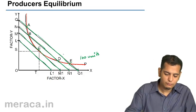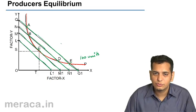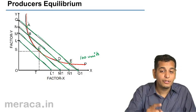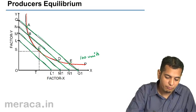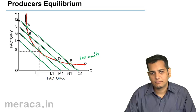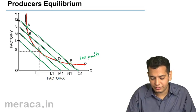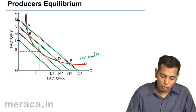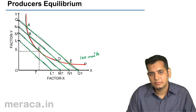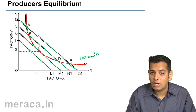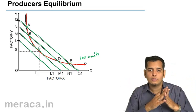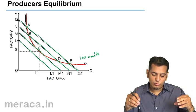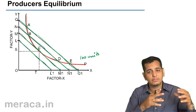It is very simple. The producer starts with the highest iso-cost line, which is QQ1, where he can produce 100 units at combination A. Likewise, he can produce 100 units at combination E. The whole curve P gives 100 units of output, so on P there are two points A and E. At both these points he can produce 100 units. However, what changes is the amount of both factors of production — the amount of factor Y is more at point A, and less at point E. Vice versa is the case with factor X.